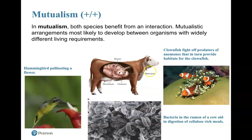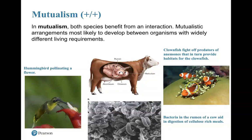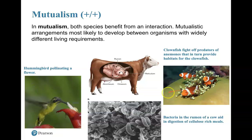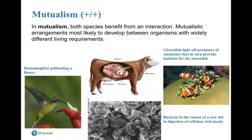The last mutualism example: clownfish living in anemones. They have a nice little home there. The clownfish benefit since they have a home. The anemone benefits because clownfish are quite aggressive — any predators that come near to eat the anemone get warded off and attacked by the clownfish. So both organisms benefit in this relationship.